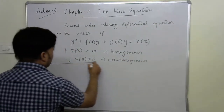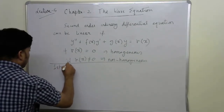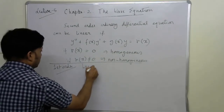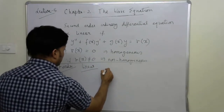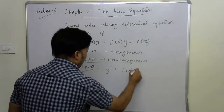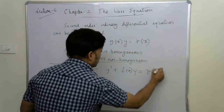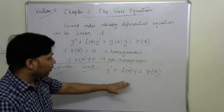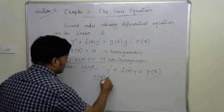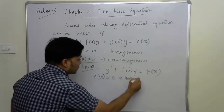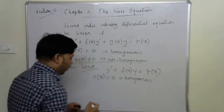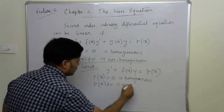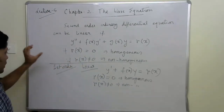Similarly, for a first order linear equation, we can write: y' + f(x)·y = r(x). If r(x) equals zero, it is called a first order linear ordinary homogeneous differential equation. If r(x) is not equal to zero, it is a first order linear ordinary non-homogeneous differential equation.